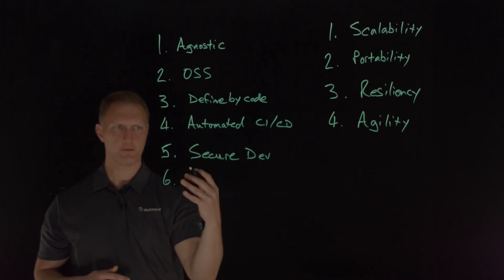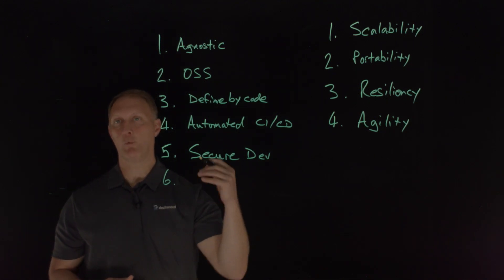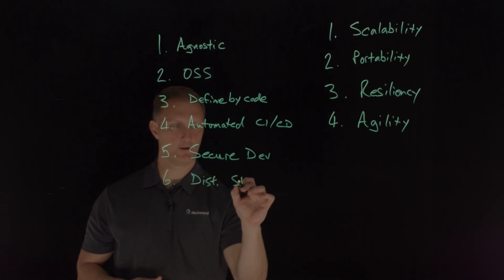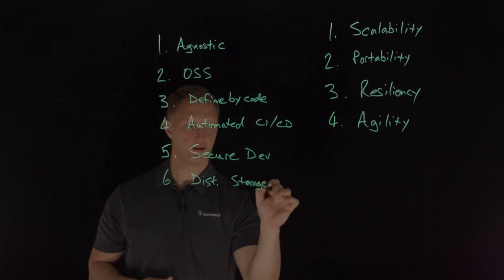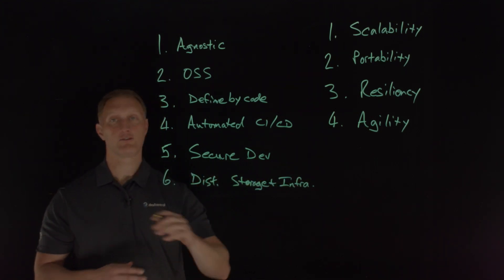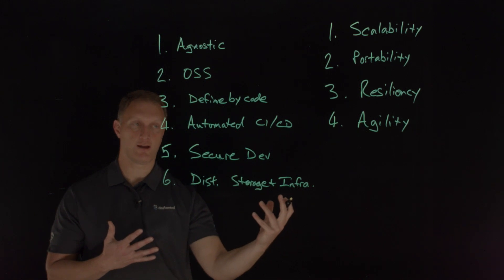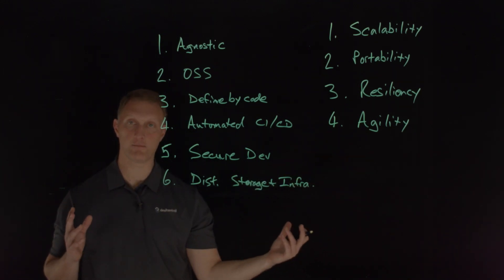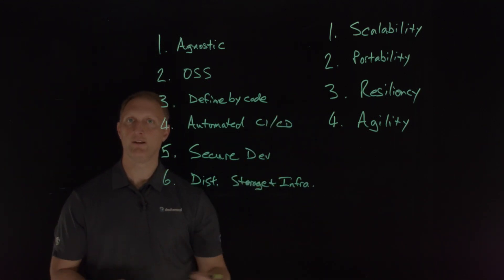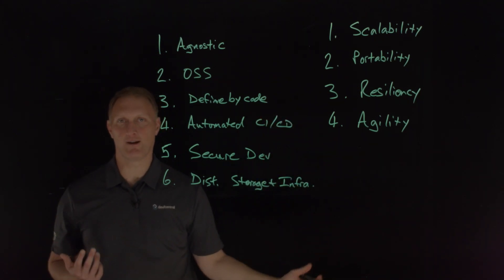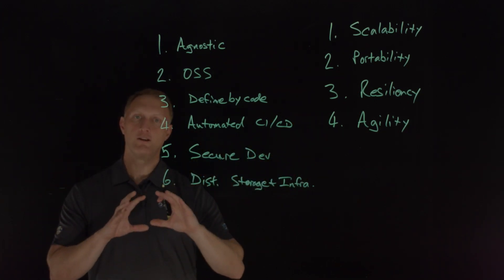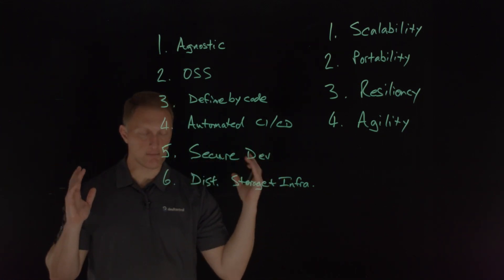The sixth principle is widely distributed storage and infrastructure. In today's world, end users of modern applications are going to be everywhere — from their house, their car, their office, to an airplane at 35,000 feet above the earth, to a boat in the middle of the ocean, or even the international space station. Your users are everywhere, so your storage and your infrastructure needs to be as wide and distributed as it can possibly be.